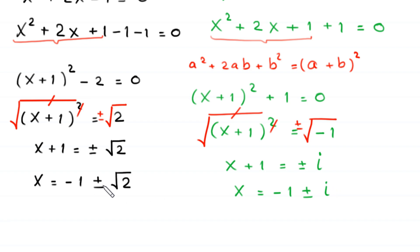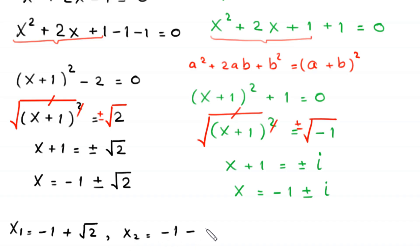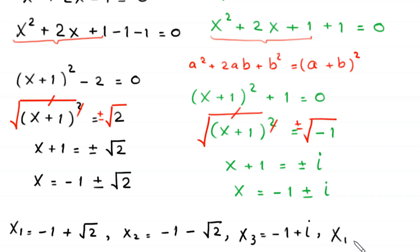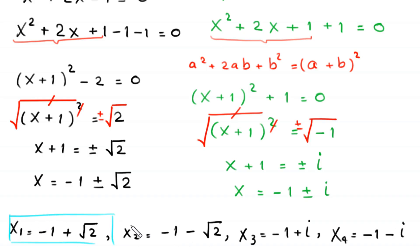So from the first equation we get two values: x₁ = −1 + √2 and x₂ = −1 − √2. From the second equation we get two more values: x₃ = −1 + i and x₄ = −1 − i. So we have four solutions in total: −1 + √2, −1 − √2, −1 + i, and −1 − i.